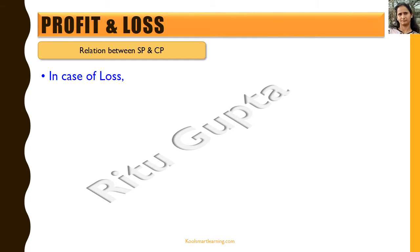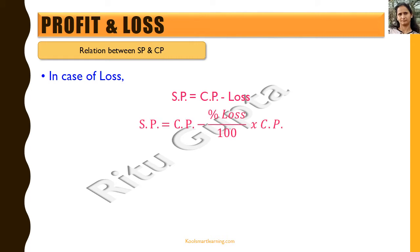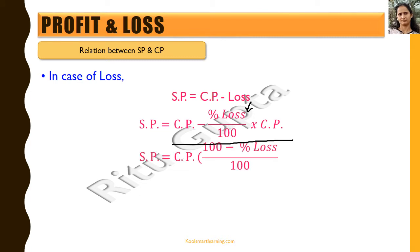Now let's see the relation between selling price and cost price in case of a loss. Selling price is less than cost price, and: SP = CP − Loss. Replacing loss with its percentage expression gives SP = CP − (Loss% / 100) × CP. Taking CP common: SP = CP × (100 − Loss%) / 100. And therefore: CP = SP × 100 / (100 − Loss%).